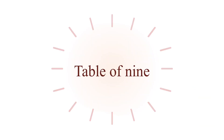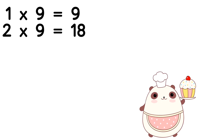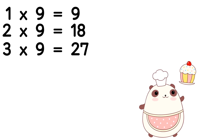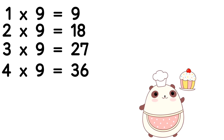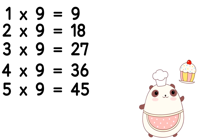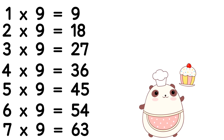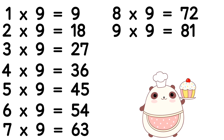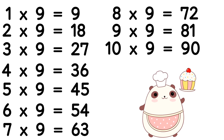Table of 9: 1 nine is 9, 2 nines are 18, 3 nines are 27, 4 nines are 36, 5 nines are 45, 6 nines are 54, 7 nines are 63, 8 nines are 72, 9 nines are 81, 10 nines are 90.